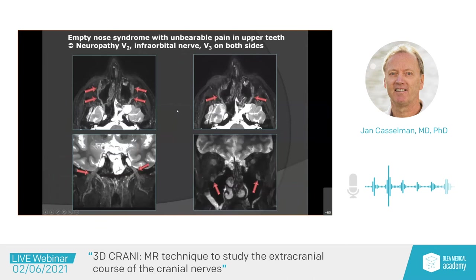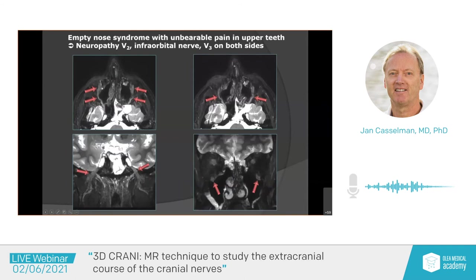Another example: a patient with empty nose syndrome. He had sinusitis, was operated several times for polyps, and in the end now has terrible pains in both cheeks and also in the mandible — nobody believes him; he's already been sent to a psychiatrist. We do this exam and look at these thick cables. This is the maxillary nerve, and the infraorbital nerve is almost twice as thick as normal. The maxillary and mandibular nerves coming through the foramen ovale are also very thick, unsharp, swollen, and irregular. We have a neuropathy of V2 and V3 on both sides, secondary to repetitive sinus surgery. These are the things we couldn't see in the past.